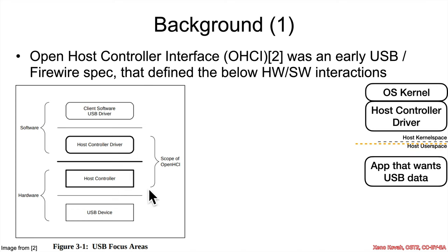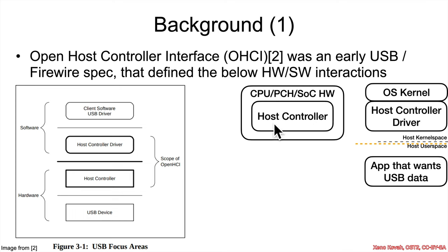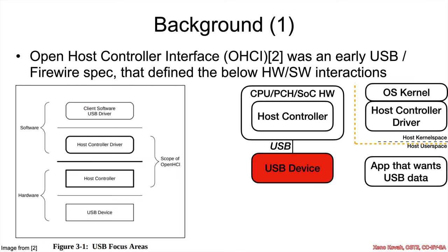In a traditional piece of hardware not using virtualization, that would look roughly like this. You've got an OS kernel, a host controller driver, and an app that wants USB data. Then you've got some piece of hardware — CPU, PCH, SOC, Northbridge, Southbridge, whatever — that implements the actual host controller hardware registers spec'd out in the spec. That's going to be separate from the operating system running on the CPU, and therefore it should be treated as distrusted. Then you've got a USB device.